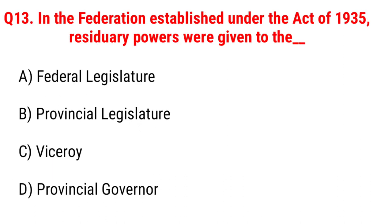Next question: in the federation established under the Act of 1935, residuary powers were given to Option A, Federal Legislature; B, Provincial Legislature; C, Viceroy; D, Provincial Governor. The right answer is Option C, Viceroy.